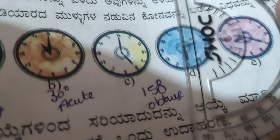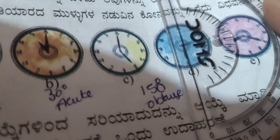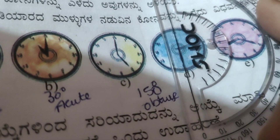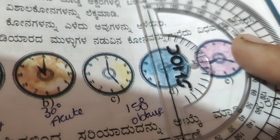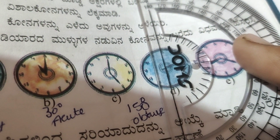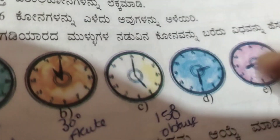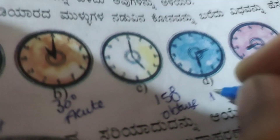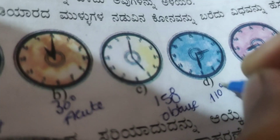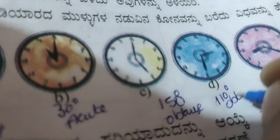For the fourth clock, measuring the angle between the hands gives 110 degrees. So 110 degrees — this is also an obtuse angle.